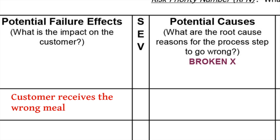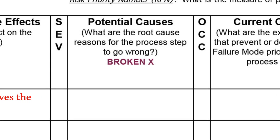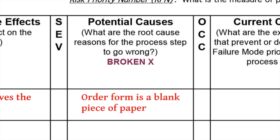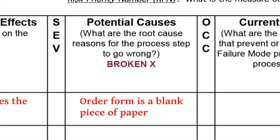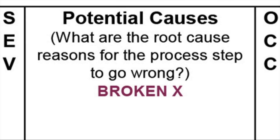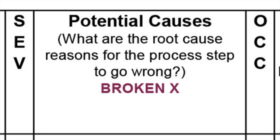In the fourth step of completing the FMEA, you skip the SEV column — we'll come back to that — and complete the potential causes column. Here you document why the process step and input has the specific failure mode listed. There may be several causes, so try to choose the single most prevalent or common cause. For the order written incorrectly failure mode, our example lists order form as a blank piece of paper as the potential cause. A good question to ask is: what are the reasons for the process step to go wrong?